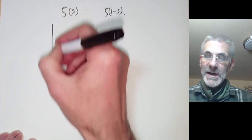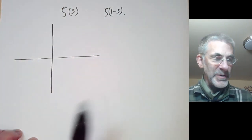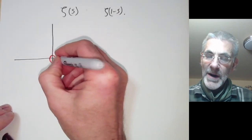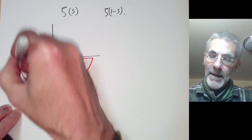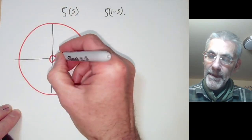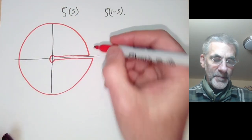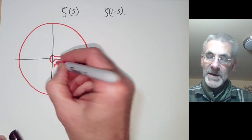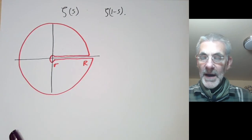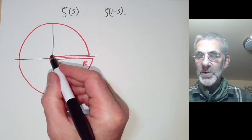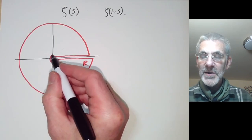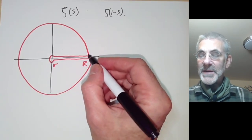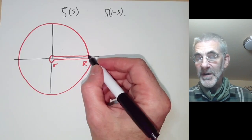We will do this using a technique known as the Bromwich contour. The Bromwich contour goes around the origin, along here, around here, and around here. We have a big circle of radius R and a little circle of radius r. In applications, the integral around the little circle often tends to zero as r tends to zero, and the integral around the big circle often tends to zero as R tends to infinity.